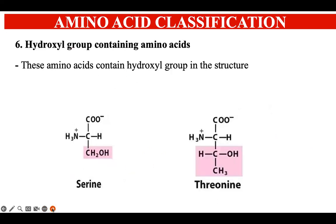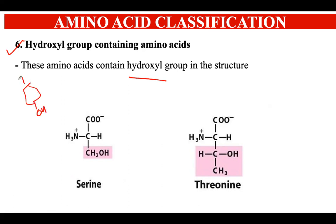The next category is hydroxyl group-containing amino acids — amino acids with an extra hydroxyl (OH) group present. Tyrosine, previously discussed under aromatic amino acids, also belongs here due to its OH group on the benzene ring. Other examples are serine and threonine, each having an OH group in their respective R group structures.